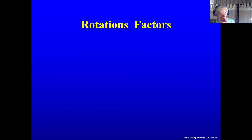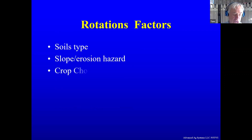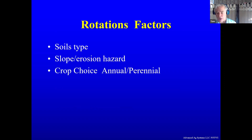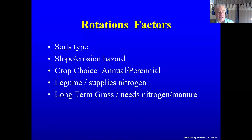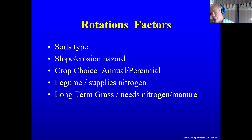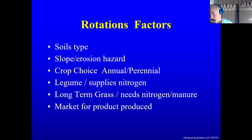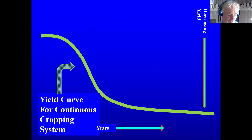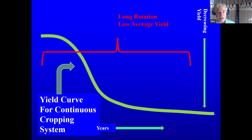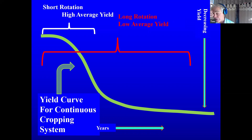The factors that affect your rotation are your soils, your slopes or erosion hazards, the crop choice — annual or perennial — how much legumes are supplying nitrogen, and whether there's long-term grass that needs nitrogen or manure. But the bottom line is what products you are producing for market. The yield curve for continuous cropping goes down over time if you grow the same crop over and over. A short rotation ends up with a much higher average yield because you're hitting the peak parts of those crops.